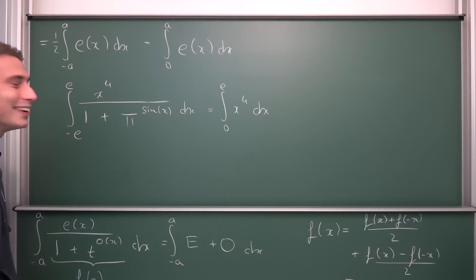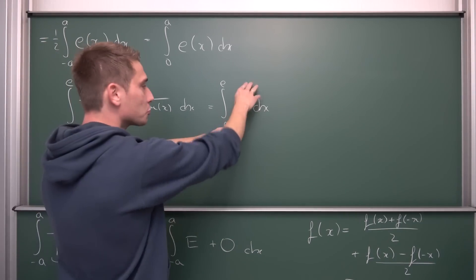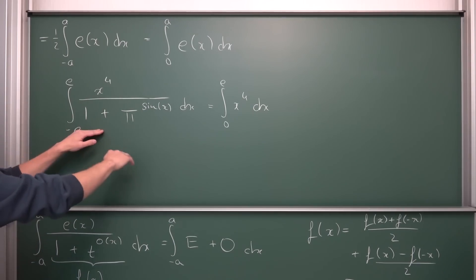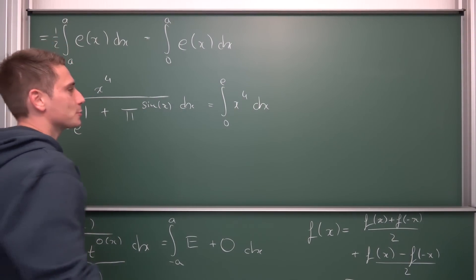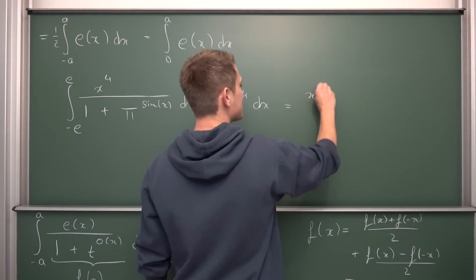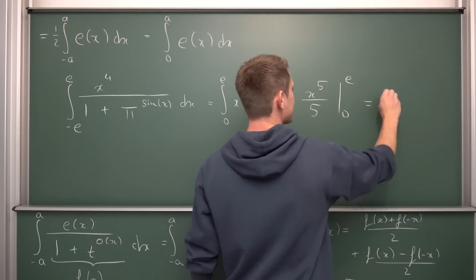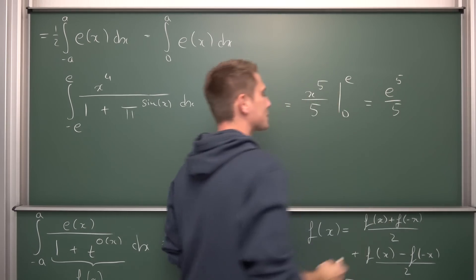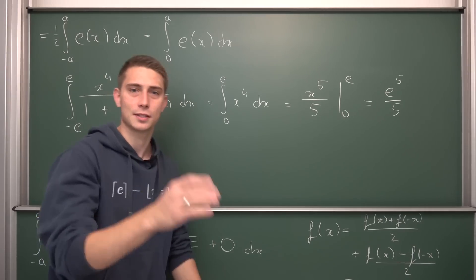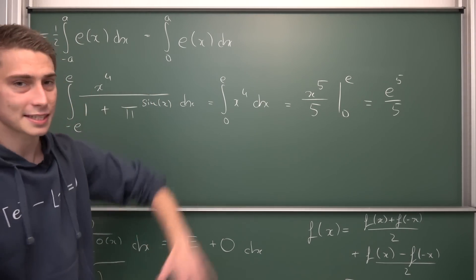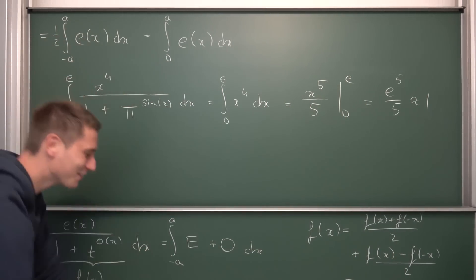Well, it's pretty easy because it's just the integral from 0 to e — because e was our a — of nothing but our even function x to the fourth power dx. Isn't that crazy? This is so cool. The best thing is it really doesn't matter what you have down here — integrals of this form are always equivalent with something completely ridiculous in the exponent, as long as you have an odd function there. This is hence nothing but x to the fifth power over 5, from 0 to e, which gives us e to the fifth power over 5.